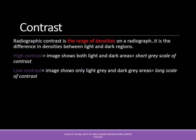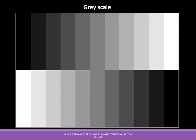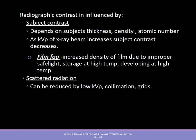Contrast is a range of densities on a radiograph — it is the difference in densities between light and dark regions. High contrast means the image shows both light and dark areas, while low contrast means the image shows only shades of gray. The human eye is adapted to recognize various shades of gray on a gray scale. Radiographic contrast is influenced by subject contrast, which depends on the thickness, density, and atomic number of the subject. As kVp of the x-ray beam increases, subject contrast decreases. Film fog — increased film density due to improper safe lighting, storage at high temperatures, or developing at high temperatures — also affects contrast, as does scattered radiation.